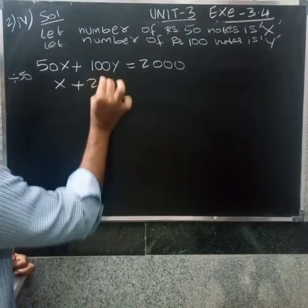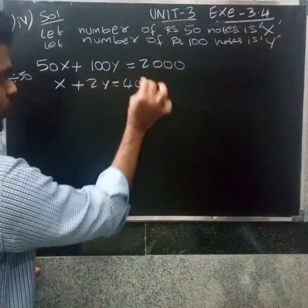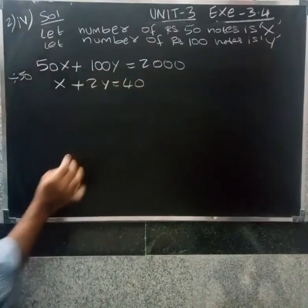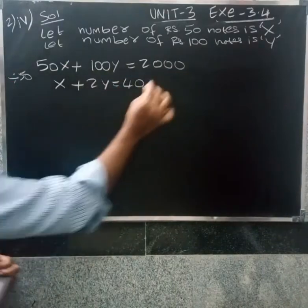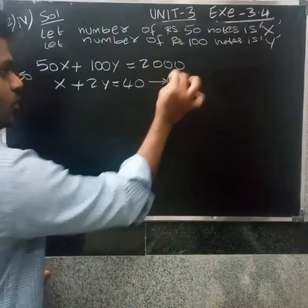Dividing the total amount by 50: x plus 2y equals 40. So 4 into 50 is 200, and 2y equals 4. This is the first equation — this is the first condition.